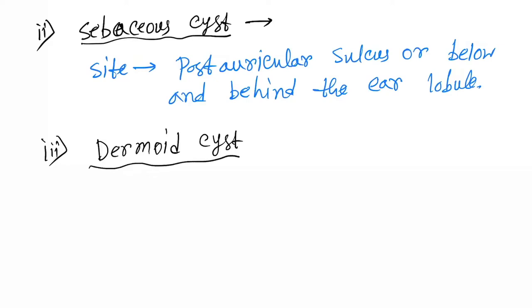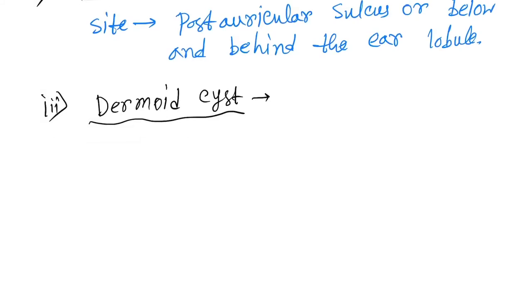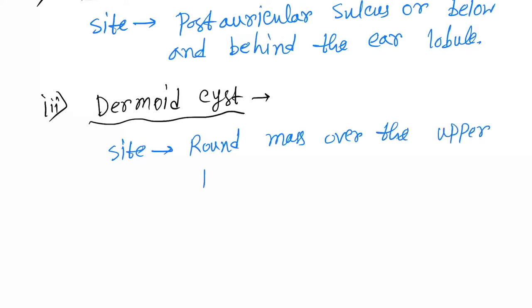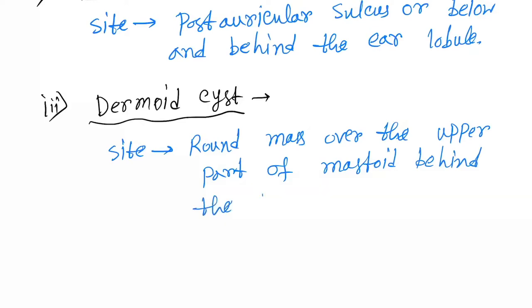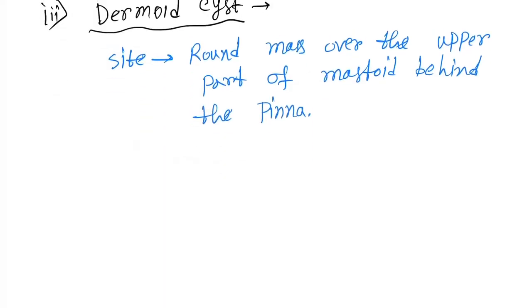The third benign tumor is the dermoid cyst. Similar to the dermoid cyst of the ovary, here it is also found in the ear. The site is a round mass over the upper part of the mastoid, located behind the pinna.